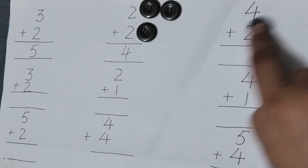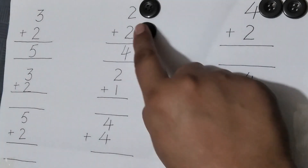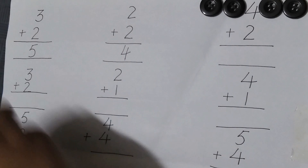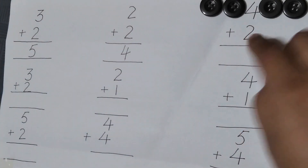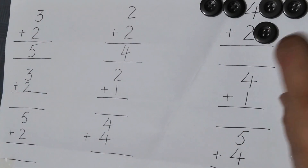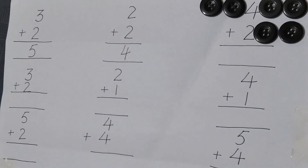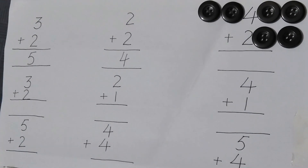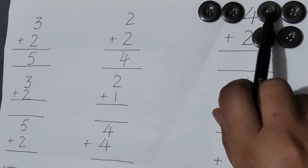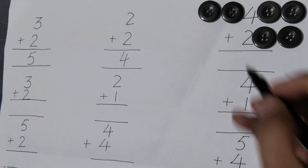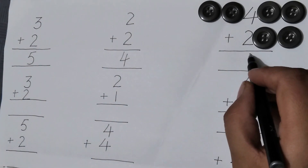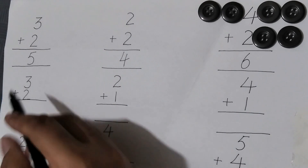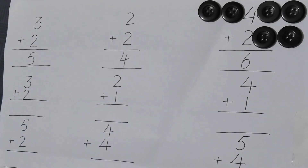Now here is four plus two. I will take four buttons — one, two, three, four — and two — one, two. Now I will count how many total buttons there are.